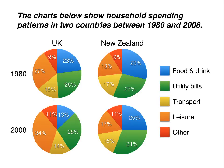Now let's look at our full pie chart question for today. Here's the question I'm going to use: The charts below show household spending patterns in two countries between 1980 and 2008. So household spending patterns means the money spent by people living in one house.